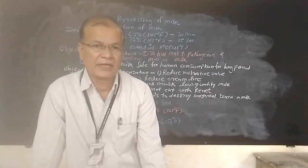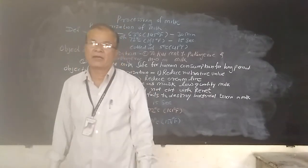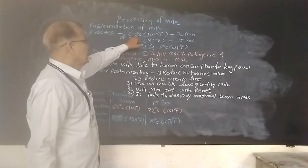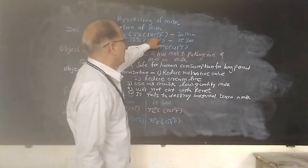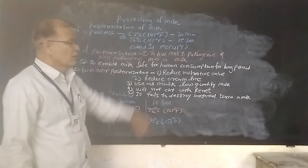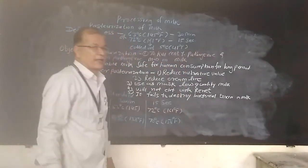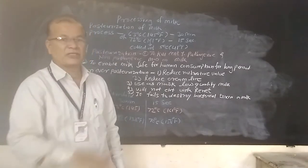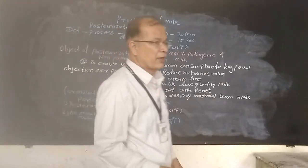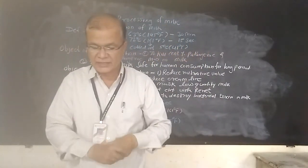Repeating the definition: pacharization is the process in which milk and milk products are heated at 63 degrees Celsius or 145 degrees Fahrenheit for 30 minutes, or at 72 degrees Celsius or 161 degrees Fahrenheit for 15 seconds, and then immediately cooled down to 5 degrees Celsius or 41 degrees Fahrenheit. That is the definition of pacharization.